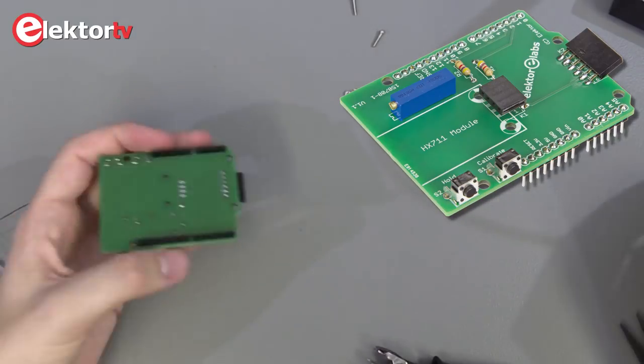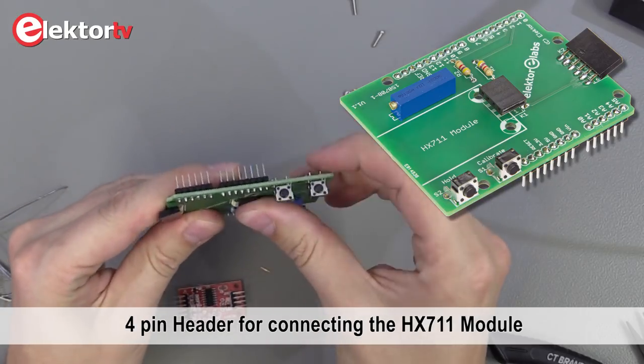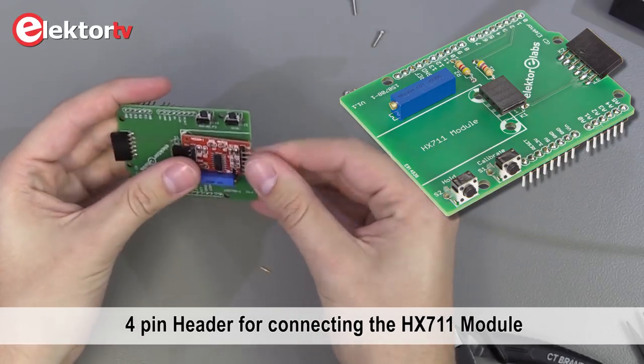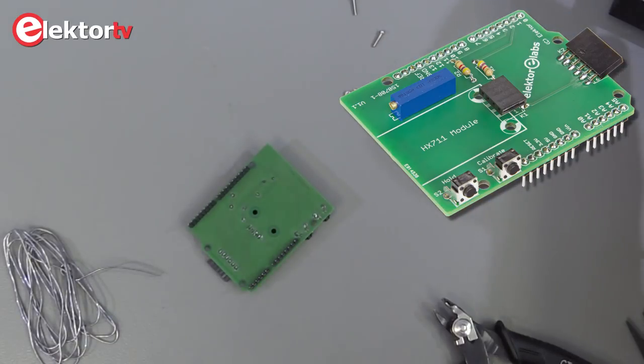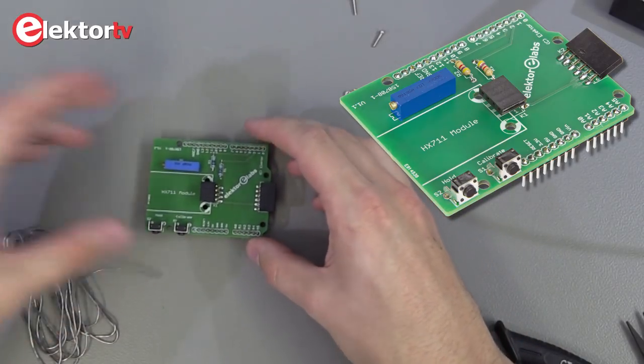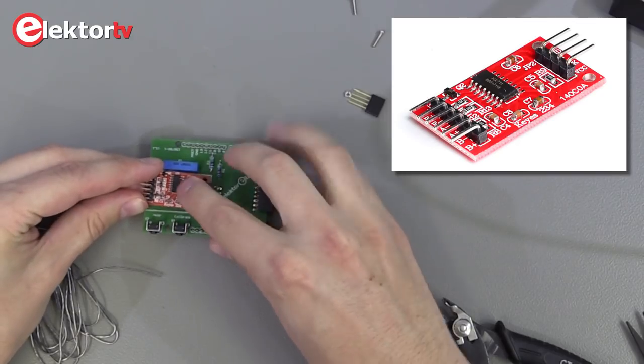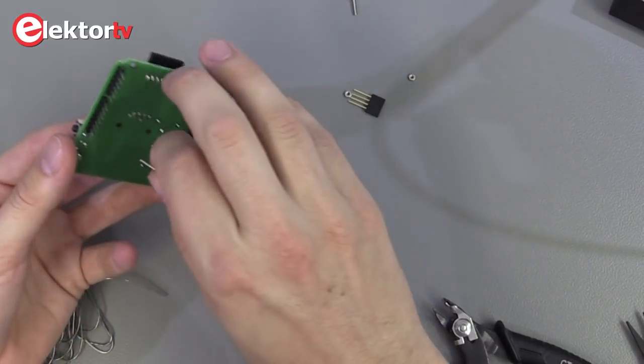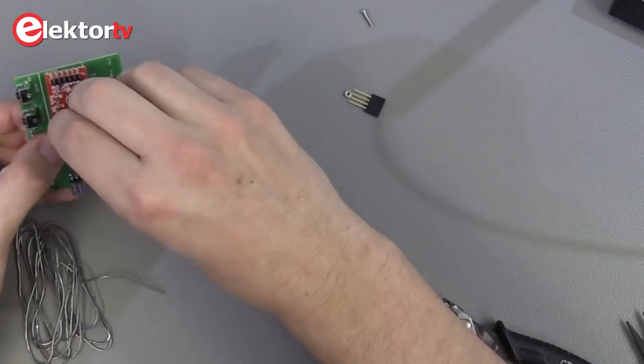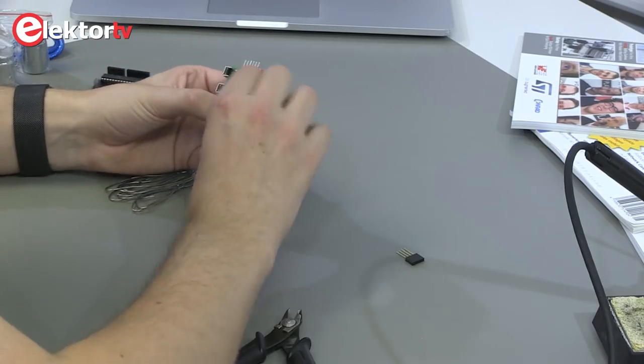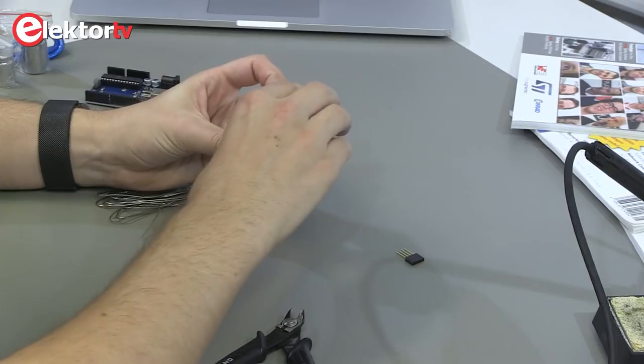Now we take the HX711 module and the four pin header. We put it in. This one also has to be angled. We put in the module. Then we fix the outer pins again. And it's ready. Now we can insert the module again to keep the module in place. A set of bolts and nuts is supplied.